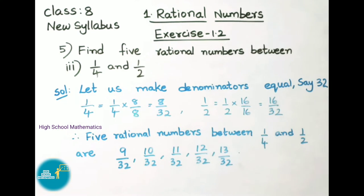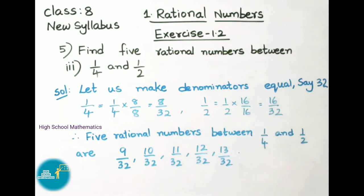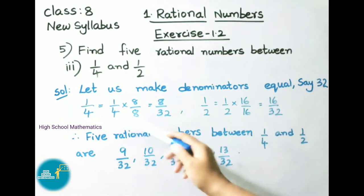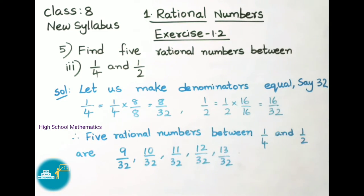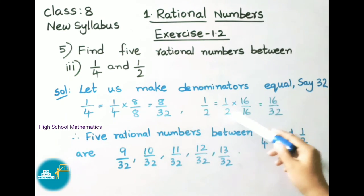See now fifth question, third sum: 1/4 and 1/2 — we have to find 5 rational numbers between them. Let us see the solution. Let us make denominators equal, say 32. We can make the denominators equal by taking any value; here we have taken 32. So the first rational number is 1/4. For denominator 4, by what number if we multiply we get 32? That is 8. So numerator and denominator are multiplied by 8: 1 × 8 = 8, 4 × 8 = 32. The second rational number is 1/2. For 2, by what number if we multiply we get 32? That is 16. So numerator and denominator are multiplied by 16: 1 × 16 = 16, 2 × 16 = 32.